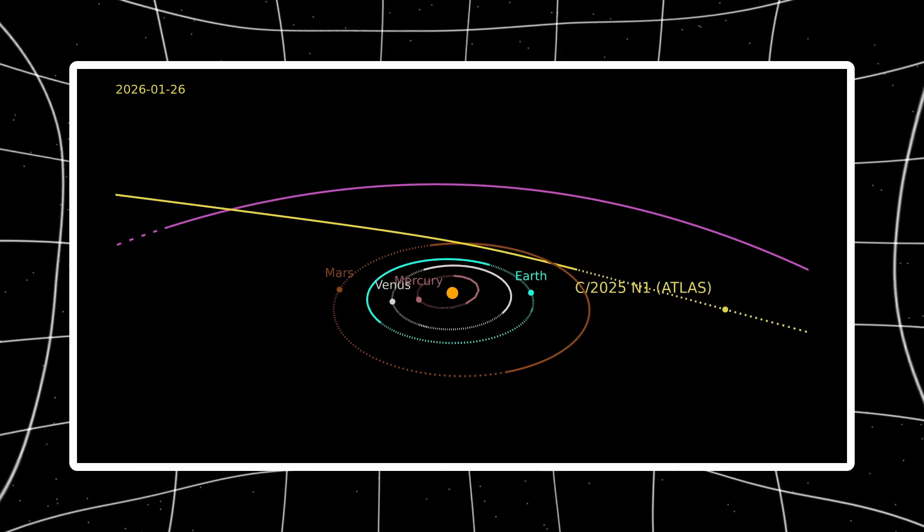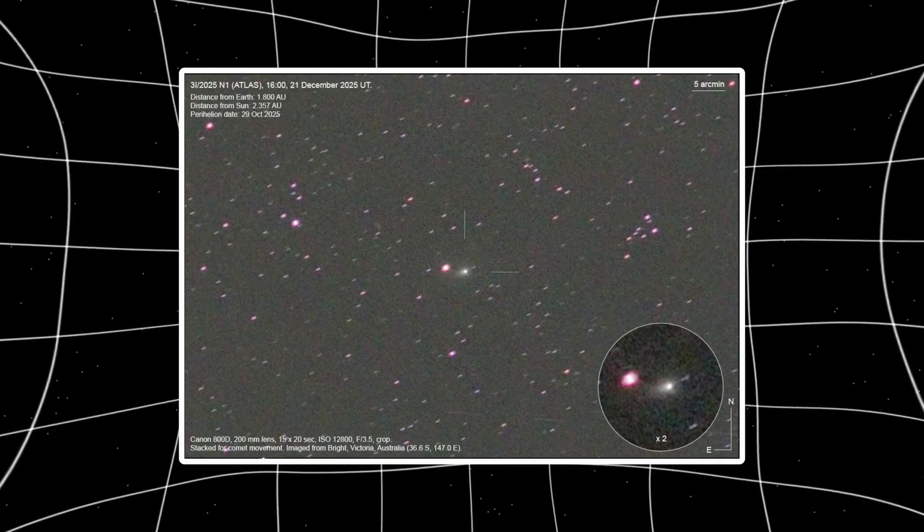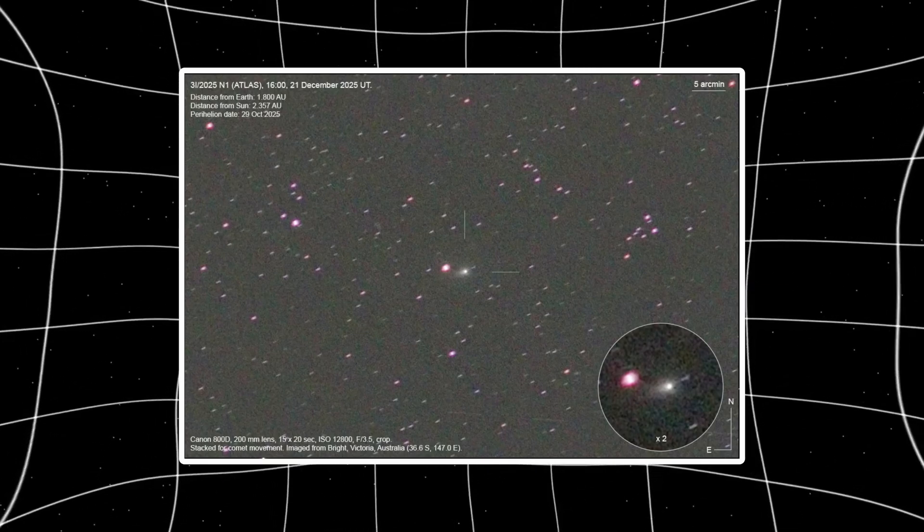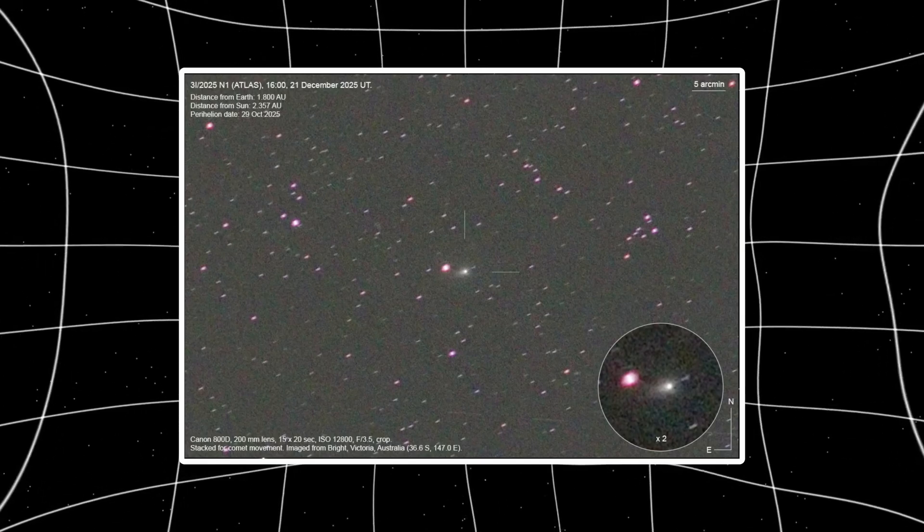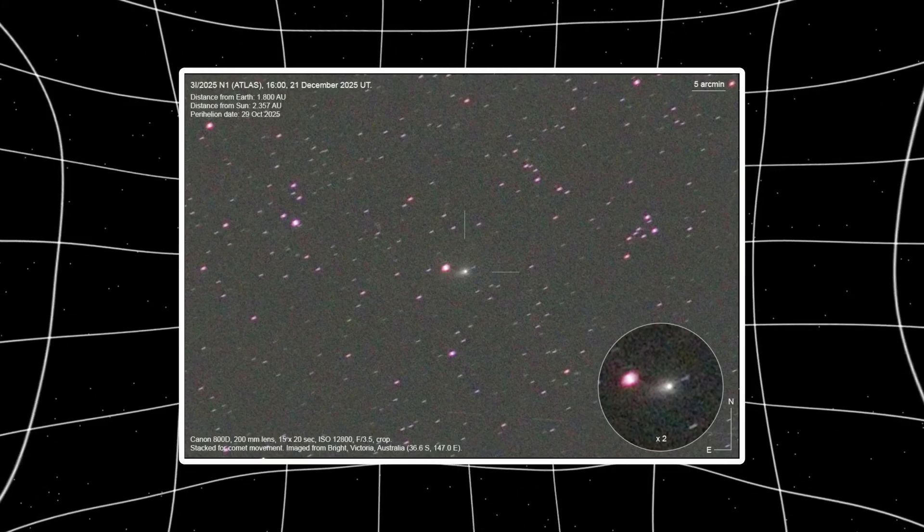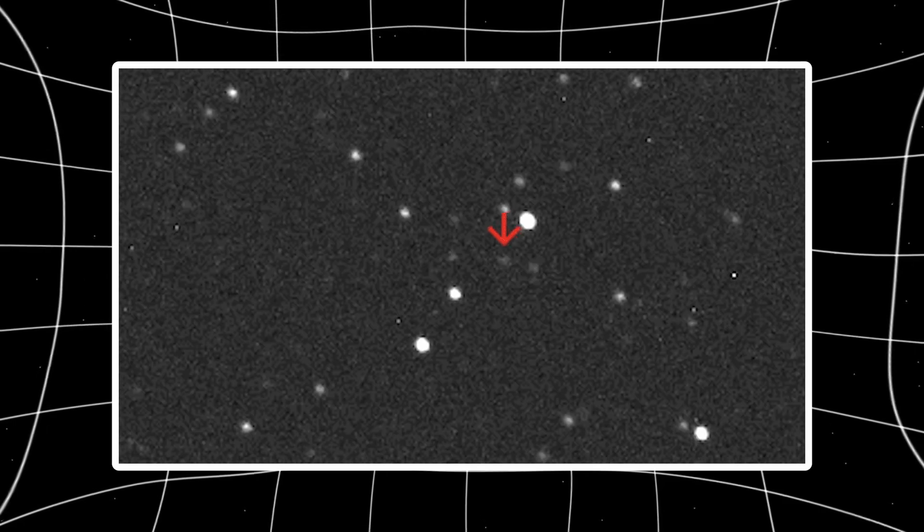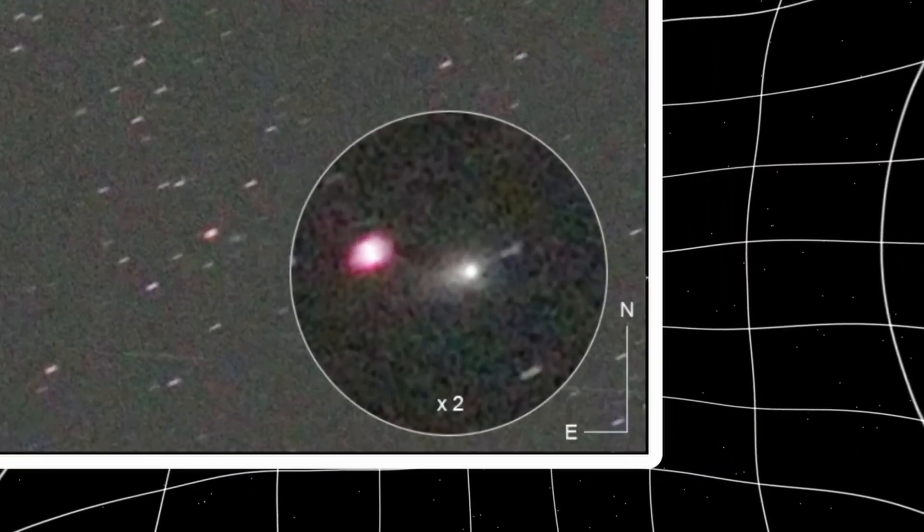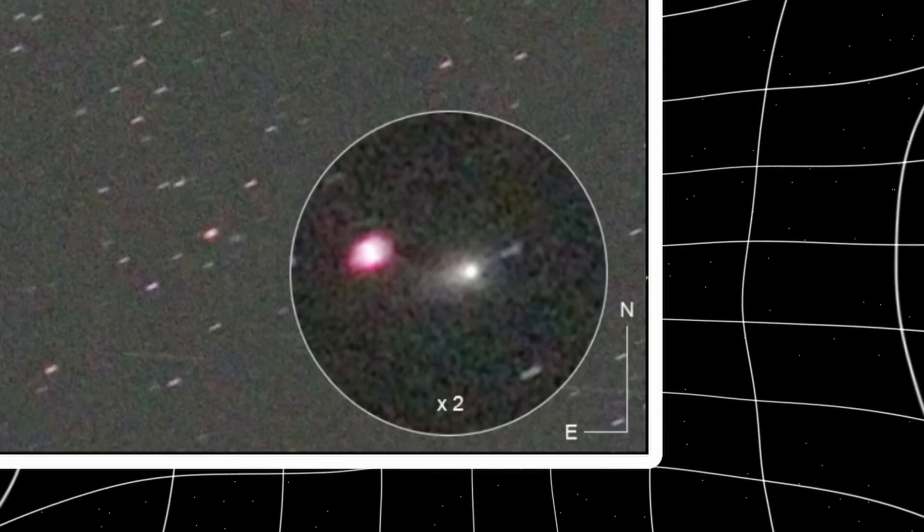Let's start with the December 21st image. Basic backyard setup. Stars streaked because the telescope is locked on the object's motion. At two astronomical units from Earth, roughly 186 million miles, you'd expect faint blur. Maybe a smudge if conditions are perfect. Instead, there's a compact central condensation with a faint asymmetric extension that's subtle but real. The inset zooms in. The glow isn't centered, it's directed. Like a nozzle. Like something choosing where to vent.